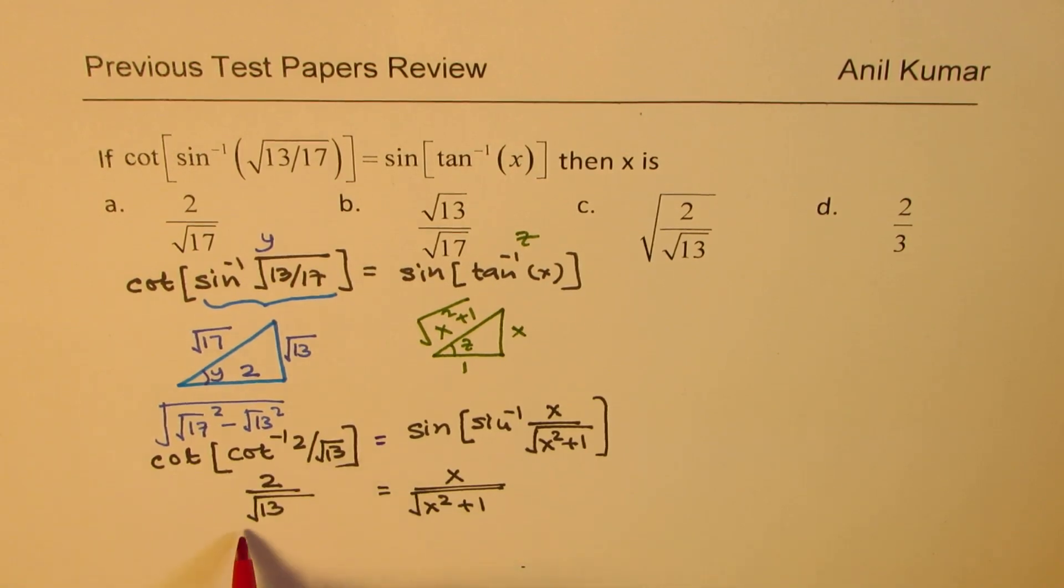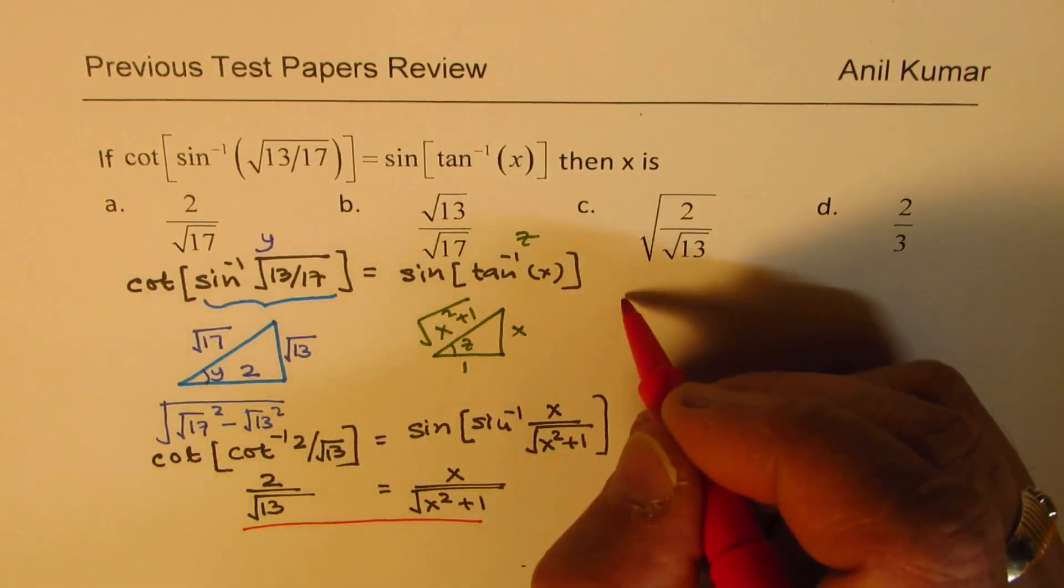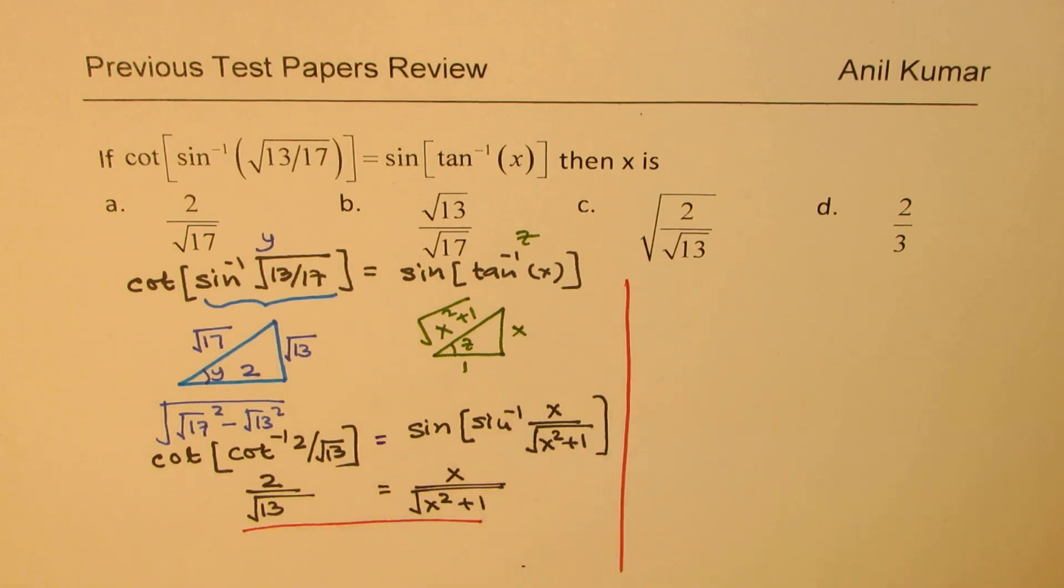Now, once we have an equation here, we can solve. So that is a critical part. I hope you have understood these steps. Any inverse of inverse function, as we have here, you have to somehow get your triangles and then work it out. Now, what we need to do is cross multiply and simplify.